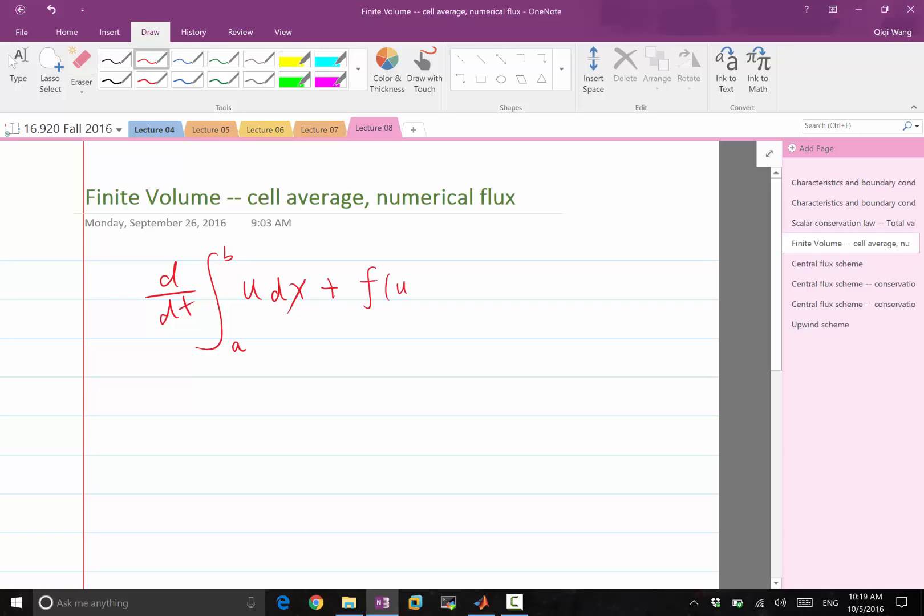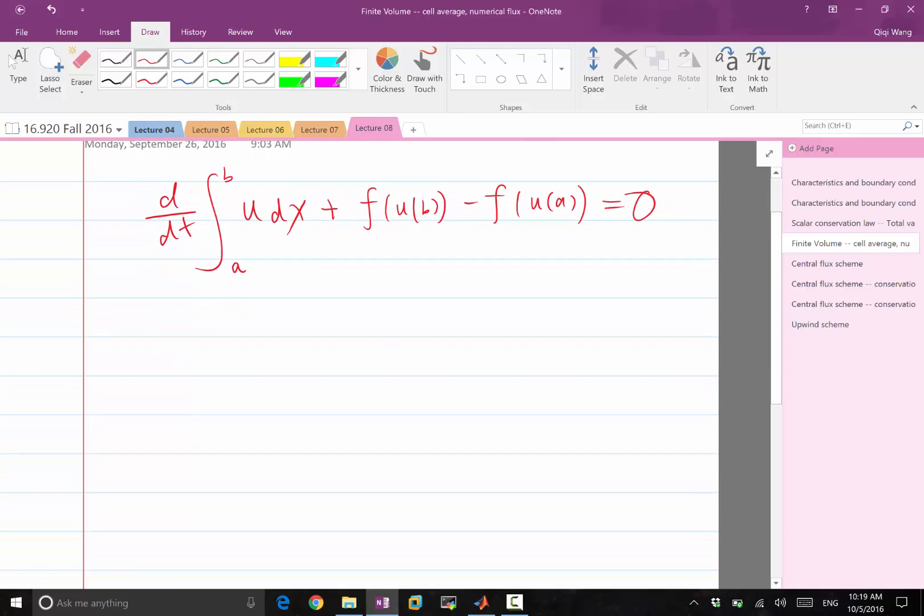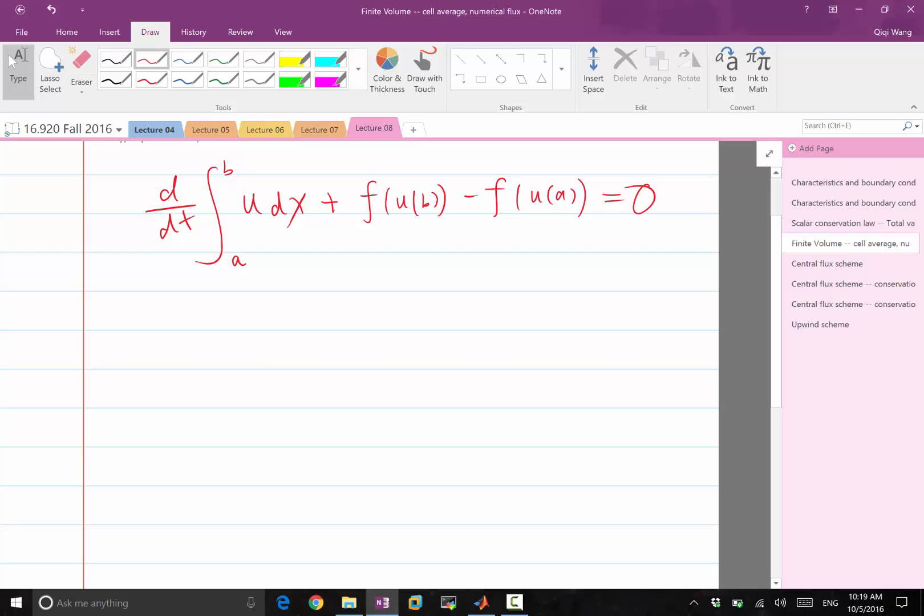F of u at b minus f of u at a equal to 0. Okay? And let us divide the whole equation by b minus a. So if you divide this, the integral of the solution over a small range by b over a, we get the average, the average value of u inside b and a.